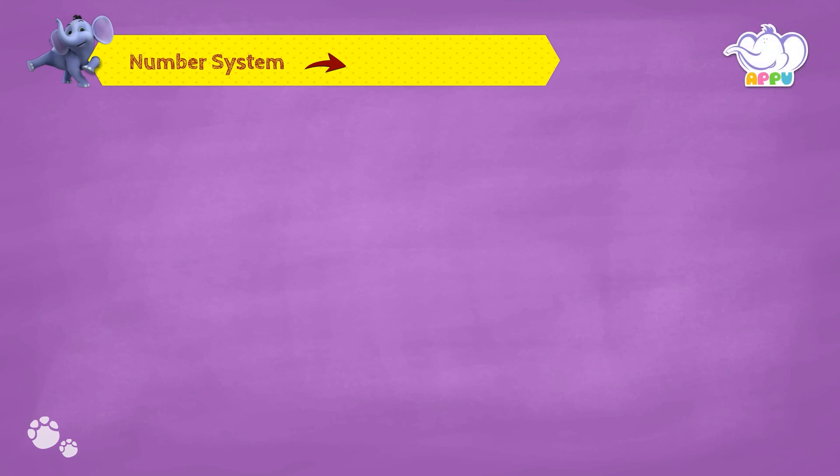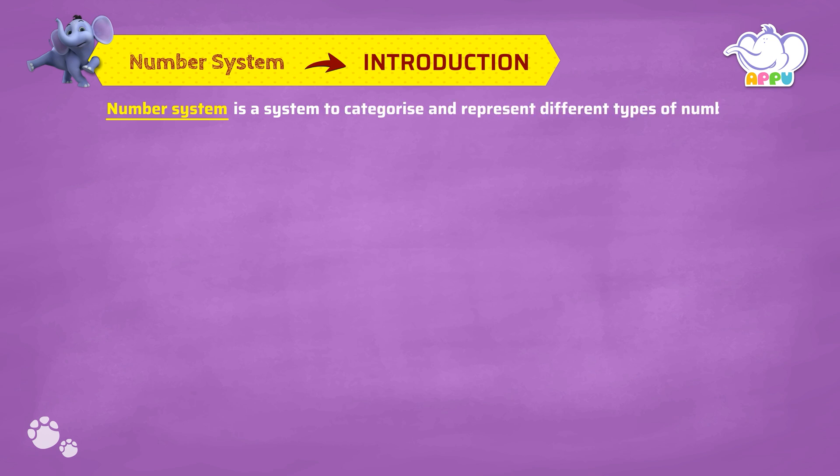Number System. Introduction. Number system is a system to categorize and represent different types of numbers.